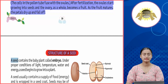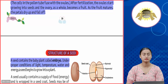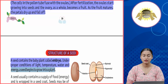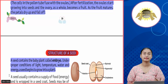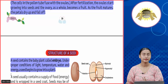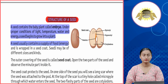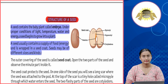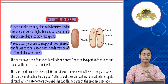Structure of a seed: a seed contains the baby plant called the embryo. Under proper conditions of light, temperature, water, and energy, a seed begins to grow into a plant. A seed usually contains a supply of food energy and is wrapped in a seed coat. Seeds may be of different sizes and kinds, and the seed coat contains stored energy and proteins.